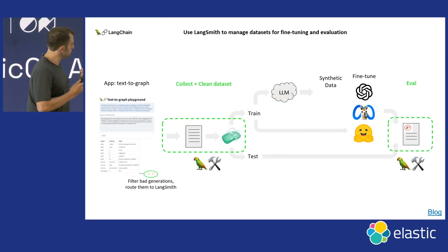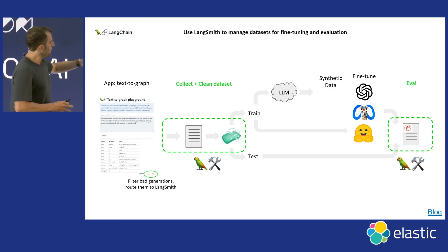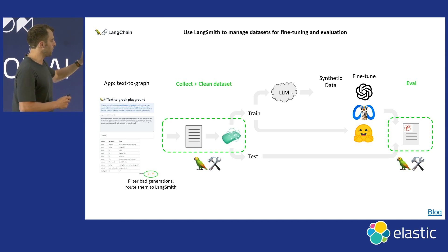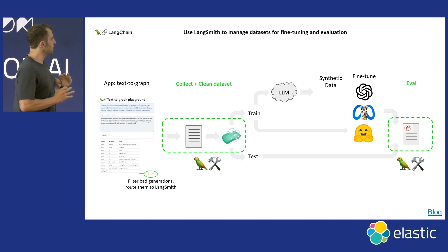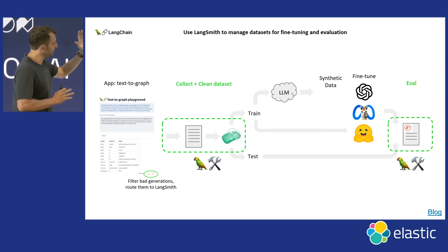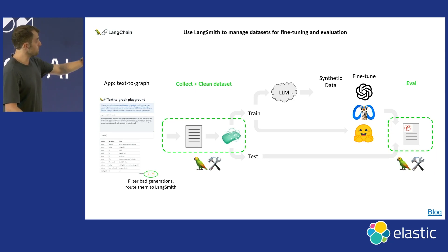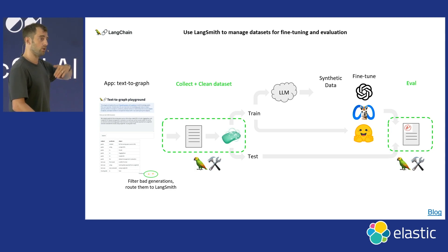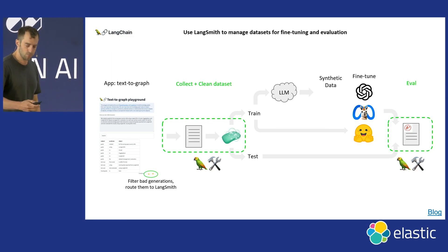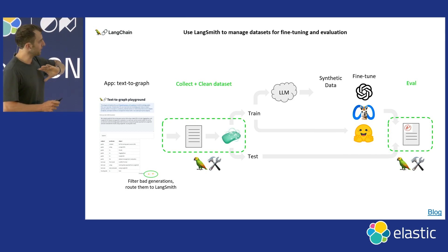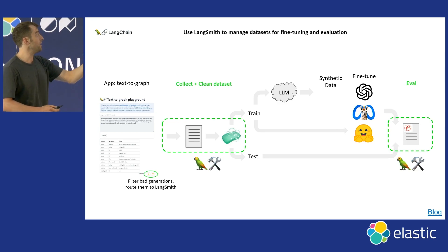Here's how we used LangSmith: imagine you have an app doing text-to-graph extraction. You can send every generation from that app to LangSmith, recording everything the LLM does. Later you can go into LangSmith, look at all your generations, and filter them. We filtered for all the bad knowledge graph triple extractions, cleaned them to build a training set, then used the Hugging Face PEFT library to fine-tune LLaMA 2 on that dataset. We then evaluated using LangSmith — collect generations, filter, clean, build datasets, train, and evaluate, all in LangSmith.